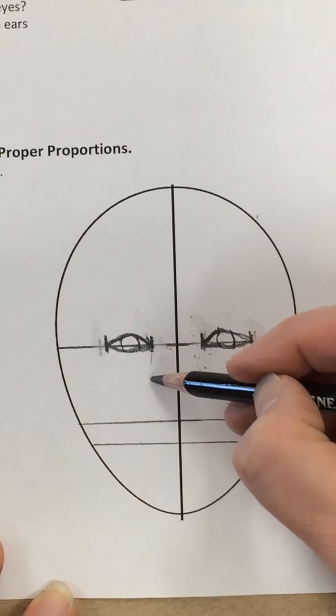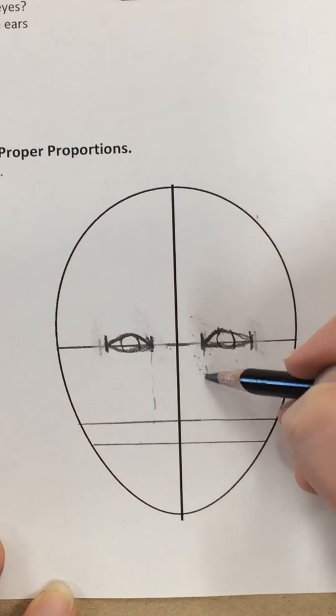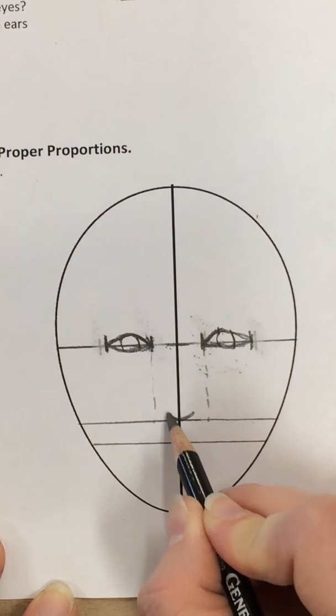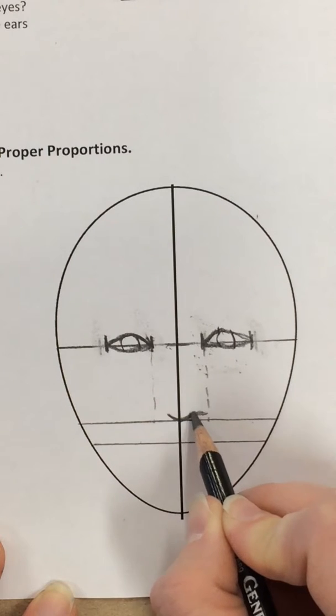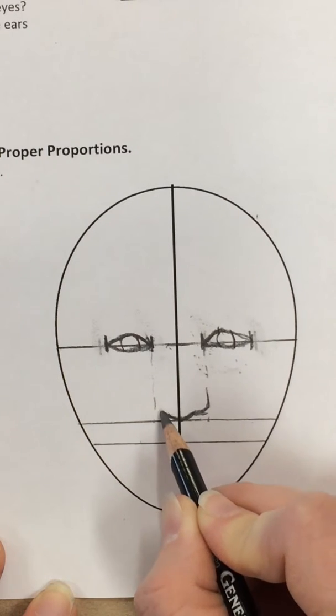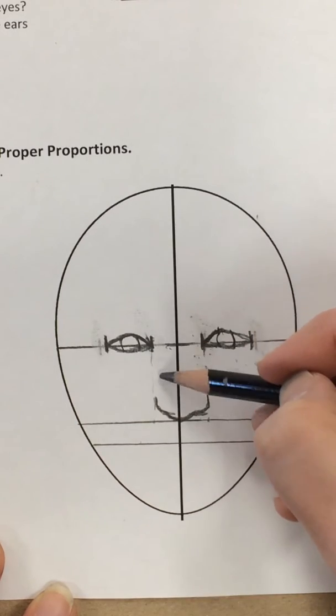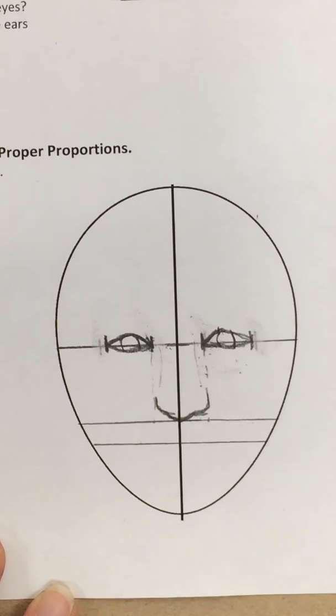The nose lines up with the corners of those eyes. With Beyoncé's nose, the tip hits this line, but the wings of her nose go up a little bit higher. You don't have to draw in anything up here because that's all in value.